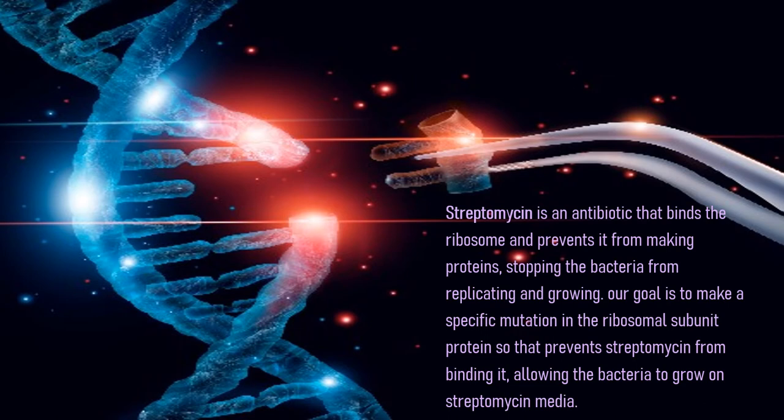In the project, we will do a CRISPR gene editing experiment. Specifically, we will use CRISPR to modify the genetic DNA of E. coli so that it becomes streptomycin resistant. Streptomycin is an antibiotic that binds the ribosomes and prevents them from making proteins, stopping the bacteria from replicating and growing. Our goal is to make a specific mutation in the ribosomal S12 protein so that it prevents streptomycin from binding it, allowing the bacteria to grow on streptomycin media.